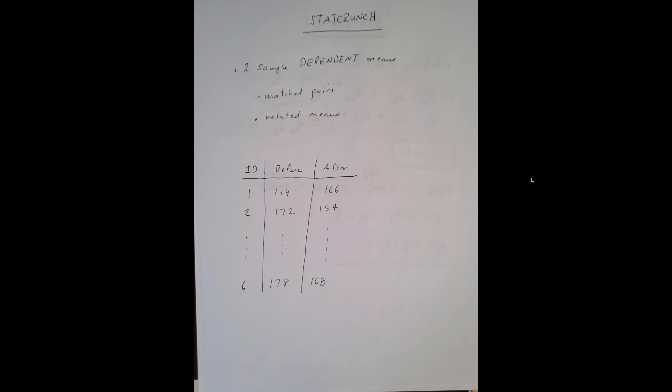The purpose of this video is to examine a two-sample dependent means problem. These are sometimes called matched pairs or related means. These measurements don't come from two independent populations — unlike the previous example with locations where there's no reason to think sales from location one relates to location two. The big difference here is that two measurements are taken on the same person.